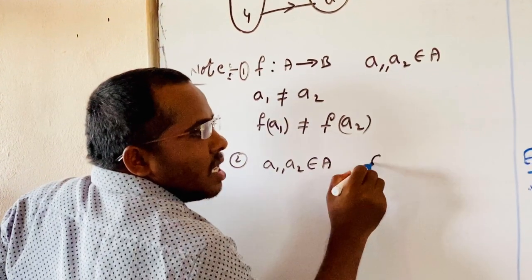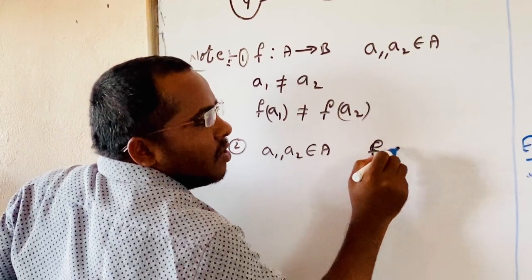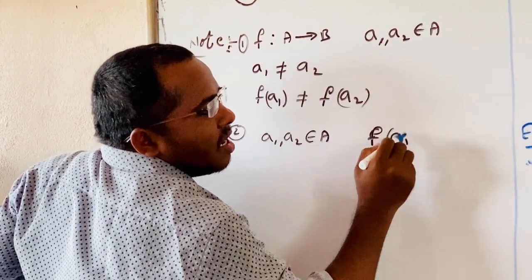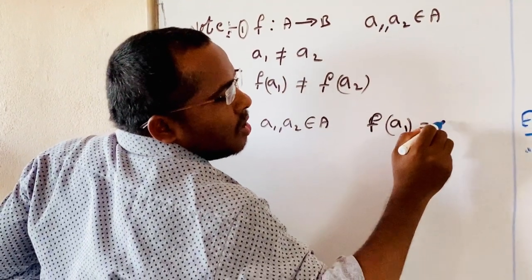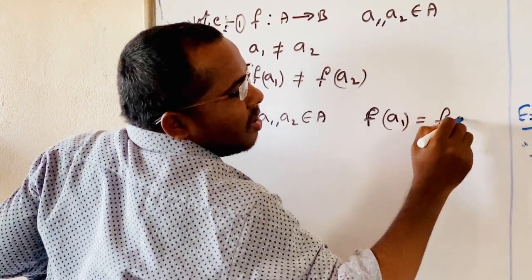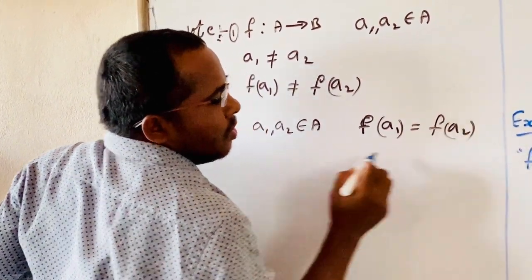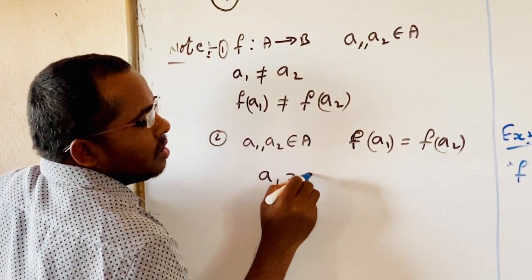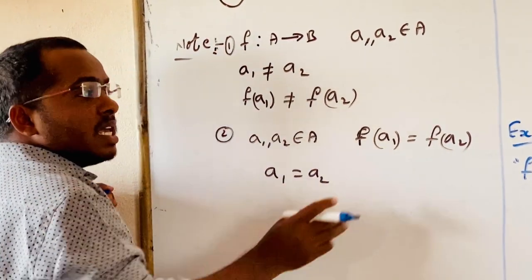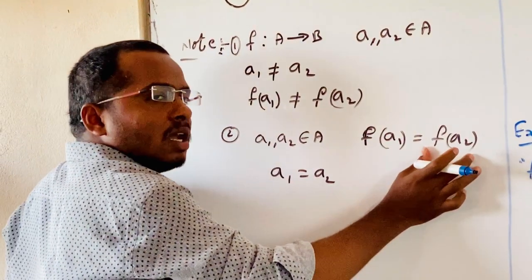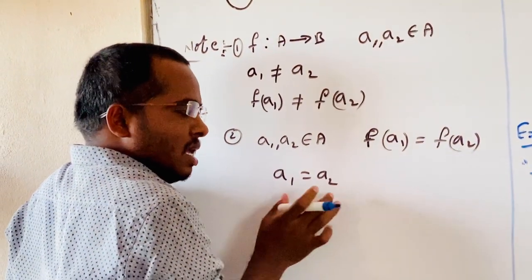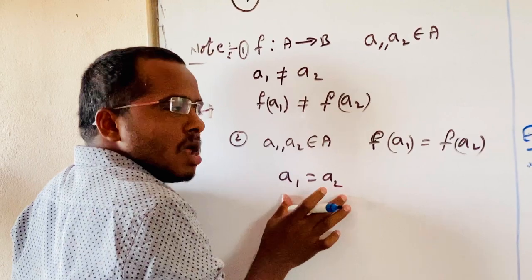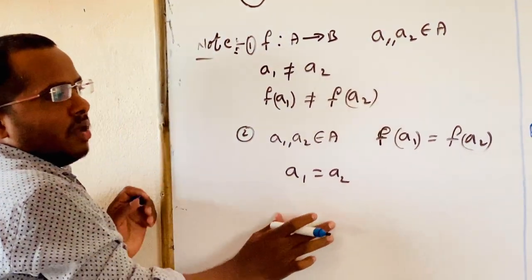Equivalently, if F(A1) equals F(A2), then A1 equals A2. That is, if the images are equal, then the elements are also equal.